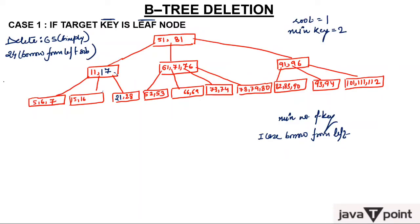Next, delete 73. Here is 73. Can we delete it? No — because the minimum number of elements is already there. Can it borrow from its left sibling? No — the left sibling says 'Sorry, I cannot help you, I am already at minimum.' But this node does have a right sibling, and the right sibling says 'Yes, you can borrow from me.'